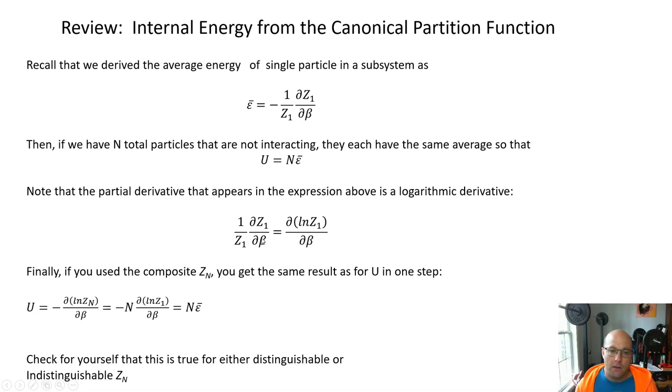So another thing I want to note is that the derivative that you see up here is a special kind of derivative. It so happens that 1 over z dz d beta is equal to the partial of ln z with respect to beta. So sometimes this is called a logarithmic derivative when you see it in this way. Derivative of something divided by something is a logarithmic derivative. This will be useful coming up in a few minutes.